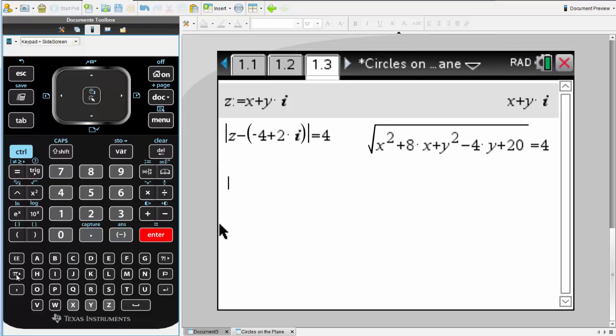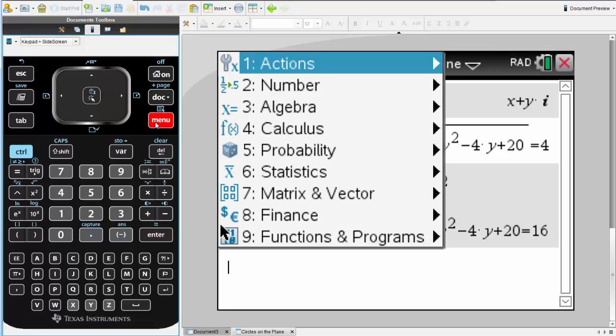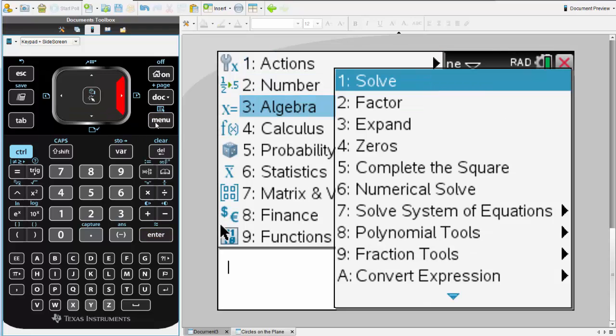The calculator automatically converts that into a Cartesian expression. If we square both sides, we can start to see the formation of our circle equation. To get into a more familiar format, let's complete the square.